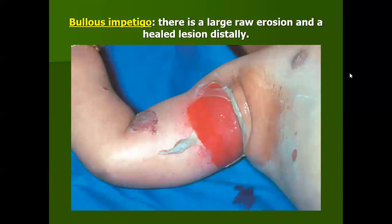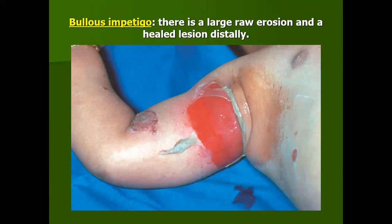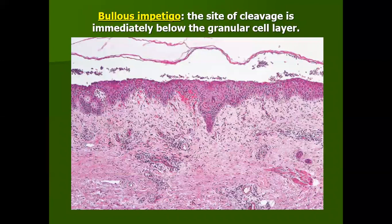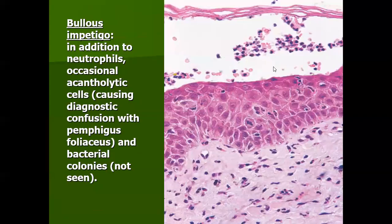Next we discuss bacterial and viral infections, for example bullous impetigo. Bullous impetigo is mainly a disease of children, characterized by small to large vesicles and blisters resulting in superficial erosions and crusting. It is again a subcorneal split, with the cleavage immediately below the stratum corneum at the granular layer. Bacterial colonies are seen within the split with a variable amount of neutrophilic inflammatory infiltrate. Occasional acantholytic cells are also seen causing some confusion; in case of doubt, you can go for direct immunofluorescence studies.